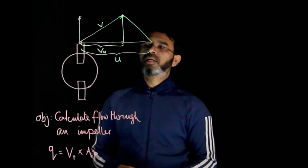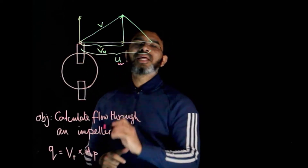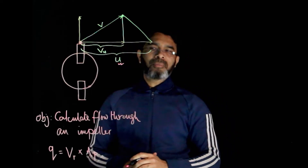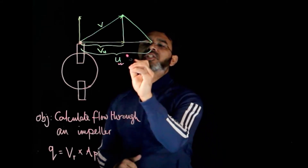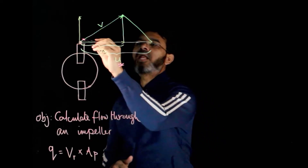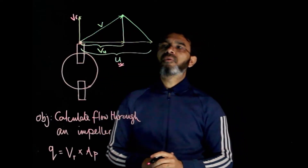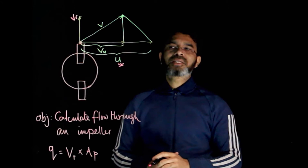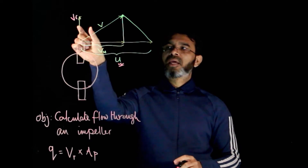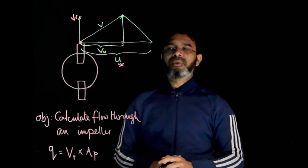At the tip of the impeller, u denotes the linear velocity of the impeller itself. The liquid at the tip will have a tangential velocity v_u, which is some fraction of u. It will also have a radial velocity v_r. From the velocity of the fluid and the velocity of the impeller we can find an expression for v_r, since we need both the radial velocity and the area perpendicular to the velocity to calculate the flow through the impeller.